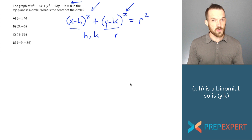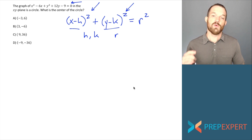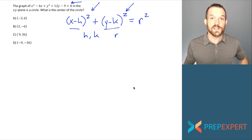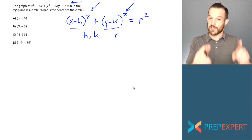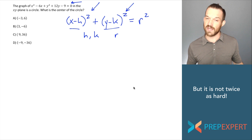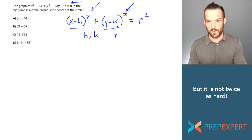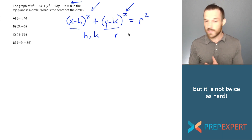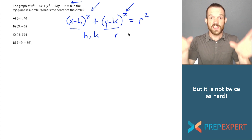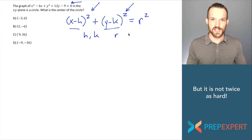We're going to actually complete the square twice. Sometimes when we're working with parabolas or quadratics, we complete the square once to put the equation in vertex form. On a circle equation question, we often have to complete the square twice — once for the x's and once for the y's. Just keep in mind as we go that we're executing the entire process twice simultaneously. Alright, let's do it.